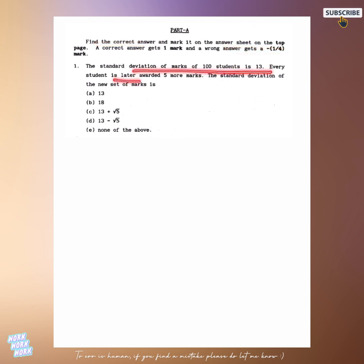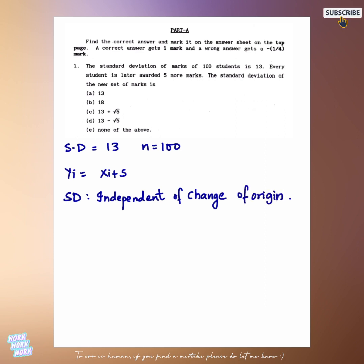The first question is, we have been given standard deviation of 100 students and 5 marks have been added to each student's code. We have to find the standard deviation of the new set of marks. Here is a reminder that standard deviation is independent of change of origin but not of scale. So the new standard deviation is equal to 13 itself.